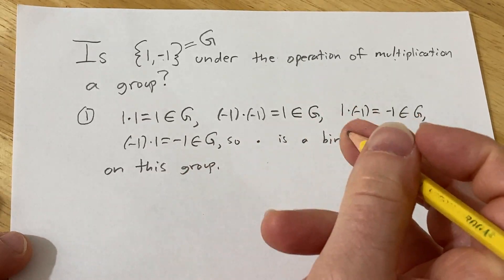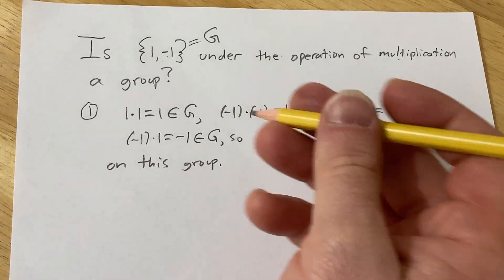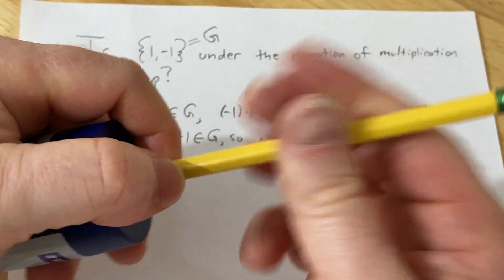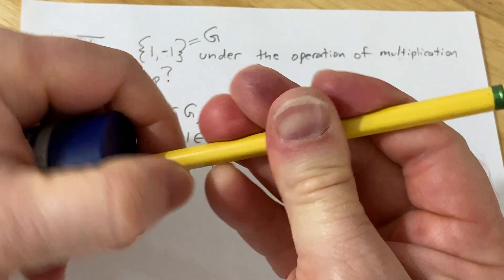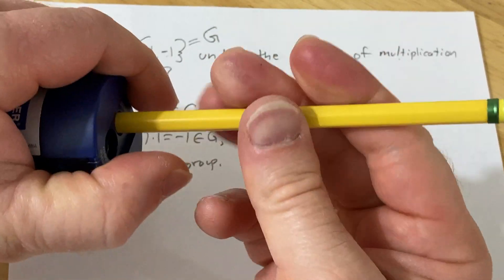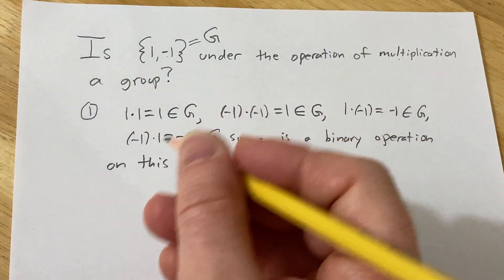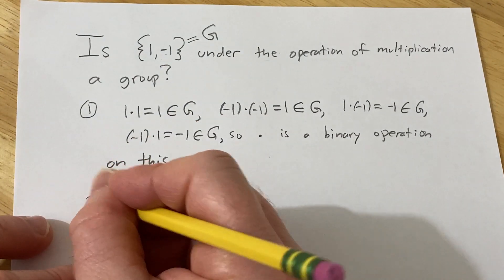Recall that a group is a set which has a binary operation which is associative. It has an identity element and every element has an inverse. Note that the set is non-empty and that is guaranteed by the existence of the identity. Alright, so now let's go ahead and check another condition.